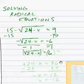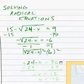Now let's multiply both sides by exponent of 2. Gives us 24 minus x equals 36.